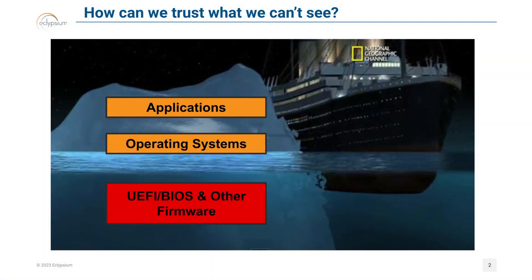How can we trust what we can't see? Often, we use the analogy of the iceberg — this one happens to be a very famous iceberg. Most users, administrators, and other personas within your organization most often see things like applications, but maybe some may see the operating system level. Most users may not go to that level. But the underlying layers — the software or firmware that enables your hardware, components such as drivers and bootloaders — fall into this category of software and firmware that operates well below the visibility line that most people just don't see. It's tough to defend your organization and tough to update things that aren't in the spotlight and aren't on your radar.